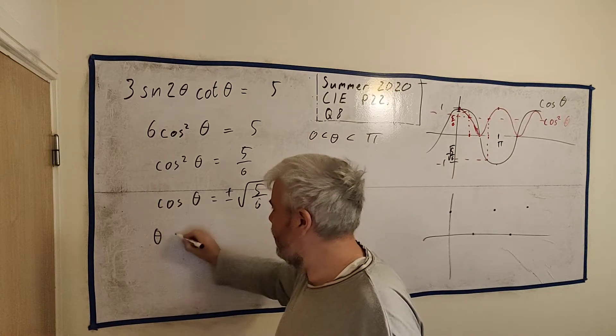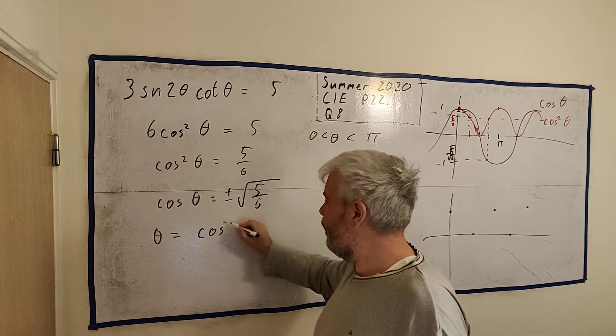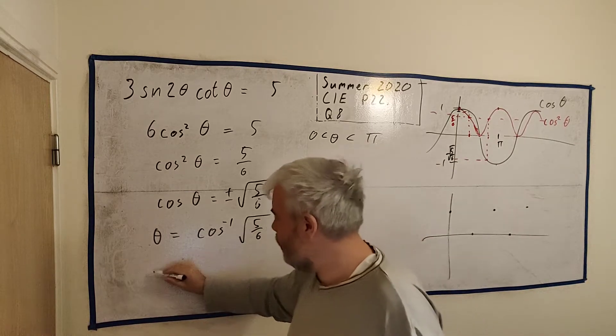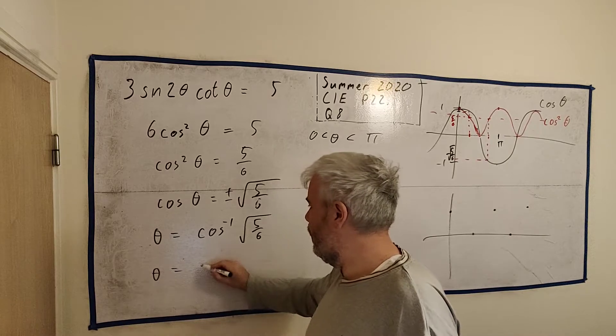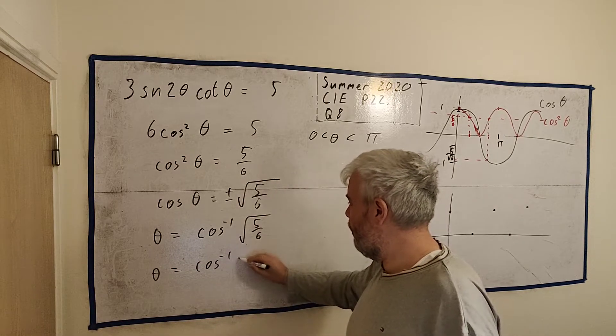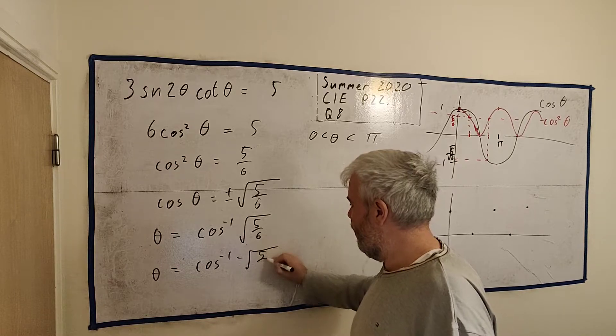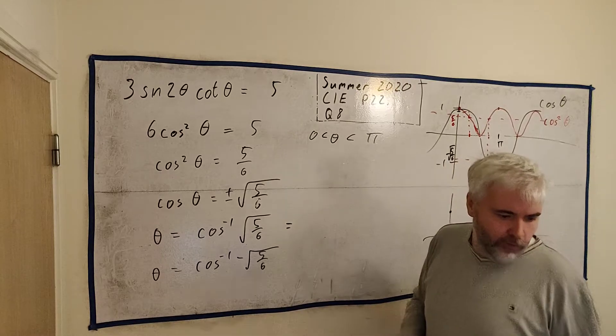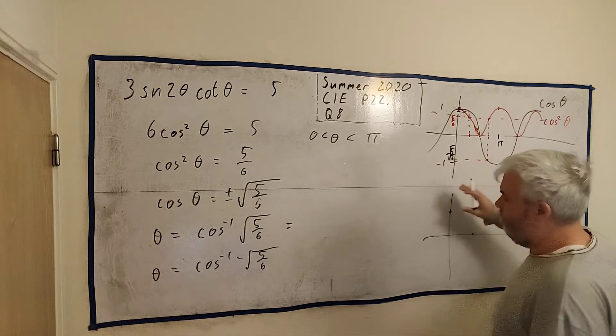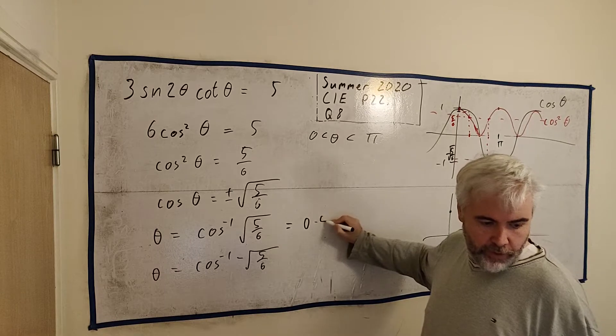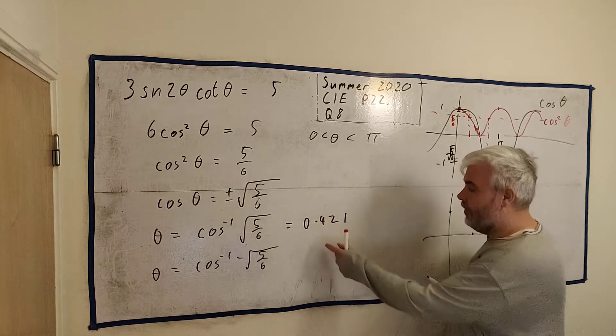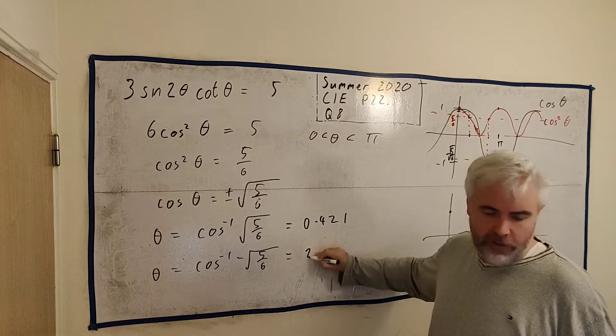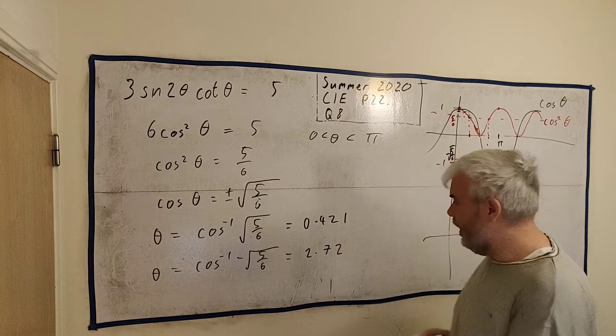So let's go ahead and solve this. We'll do it twice. We'll do θ is equal to the inverse of cosine of square root of 5 over 6. And we'll do it again. θ is equal to the inverse of cosine of minus square root of 5 over 6. And if we put these into a calculator, this one will come out, just checking my notes here, as, yeah, that will be 0.421. You want three significant figures. 1, 2, 3. It says going on much longer in the calculator.